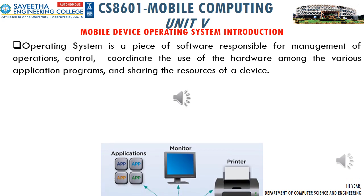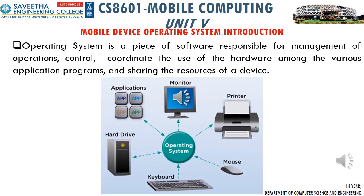What is an operating system? An operating system is a piece of software responsible for management of operations, control, and coordinating the use of the hardware among the various application programs, and sharing the resources of a device. In this picture, you can see how an operating system acts as an interface between user and hardware. The OS controls system applications and hardware devices such as keyboard, monitor, printer, etc.